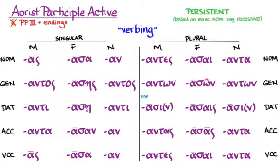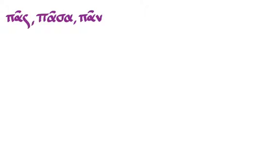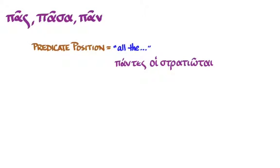Okay, using pas, pasa, pan is pretty easy. In predicate position, before the article of the noun it's modifying, it means all the, as in, pontes hoi stratiotai, all the soldiers. Notice how that's exactly the way English uses all, before the English article, all the soldiers.